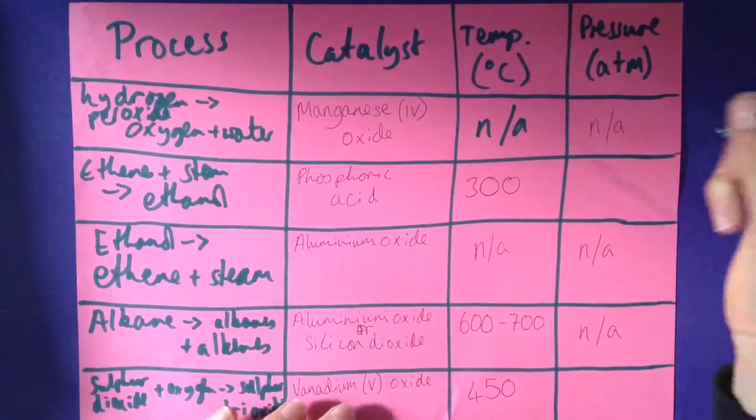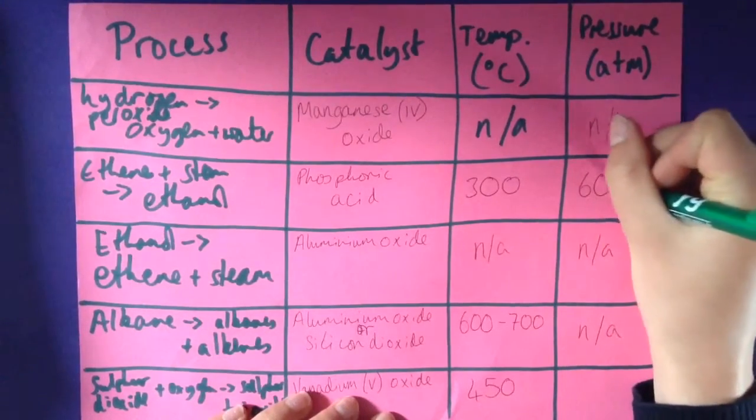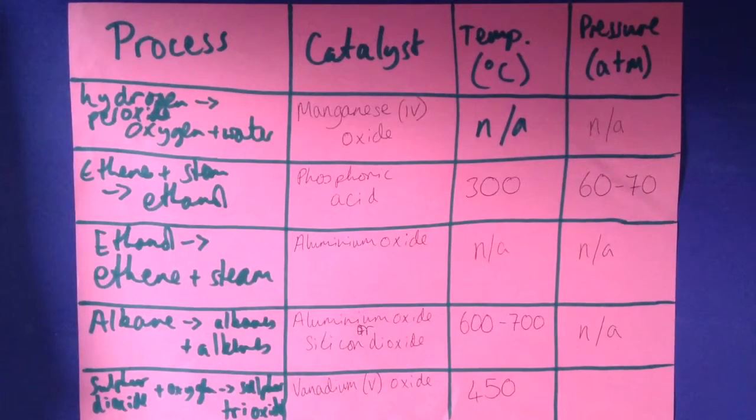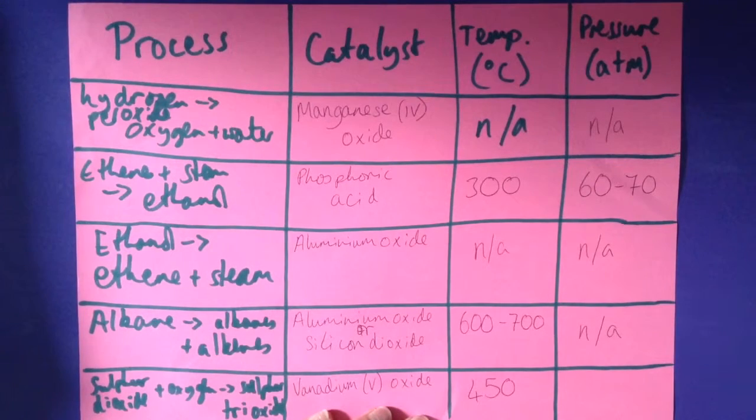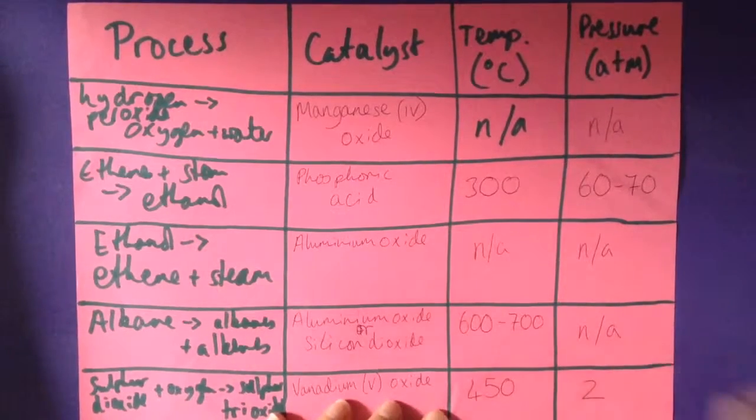The pressure for ethene and steam is 60 to 70 atmospheres, so that's 60 to 70 times atmospheric pressure, which is what you're feeling right now. And for sulfur dioxide and oxygen combining to make sulfur trioxide in the reversible reaction, it is a pressure of about 2 atmospheres.